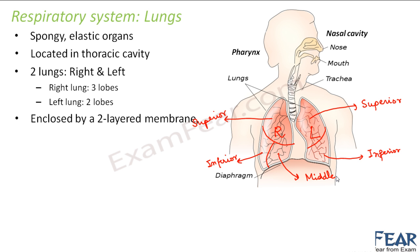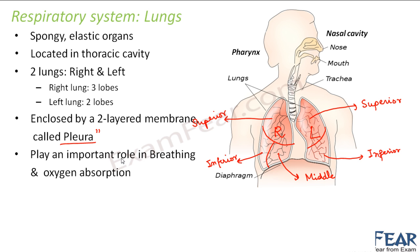Lungs are the organs where the actual exchange of gases takes place, so they must be well protected inside the body. To ensure that protection, they are surrounded by a two-layered membrane. You can see two black lines here — that is the double-layered membrane, and the space between these two layers is known as the pleural cavity. This membrane is called the pleura.